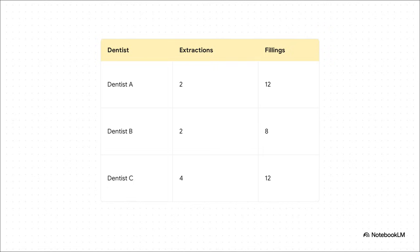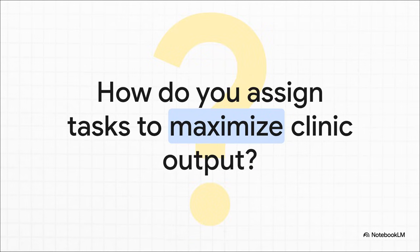And then you have Dentist C, who's a beast. They can do four extractions or 12 fillings in an hour. So right away, you can see Dentist C has the absolute advantage in extractions, right? They can do the most. Okay, so you're the manager. Here's the puzzle.